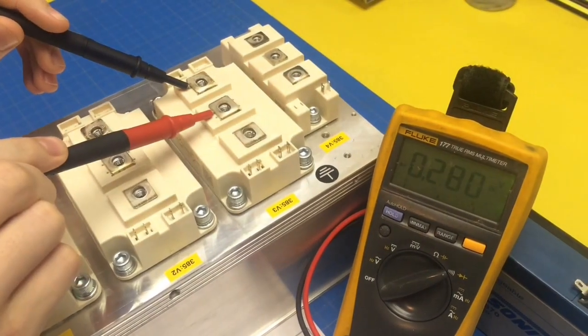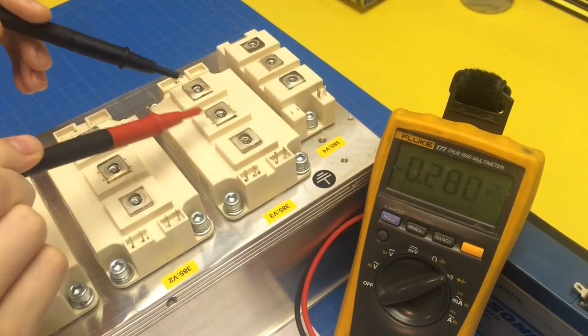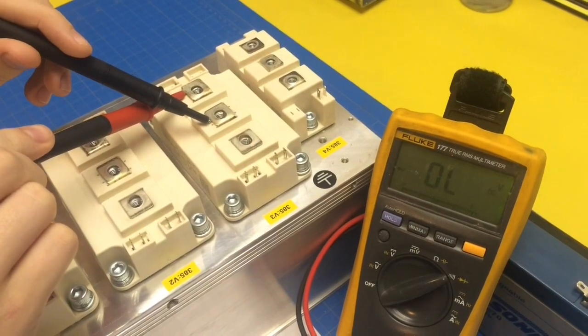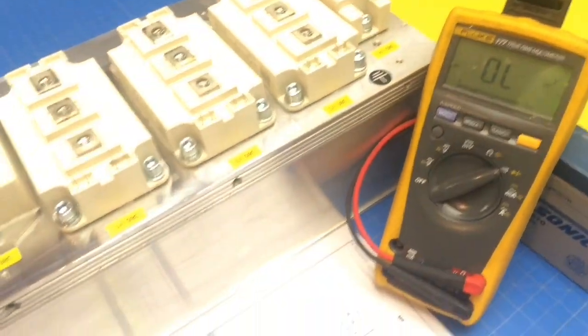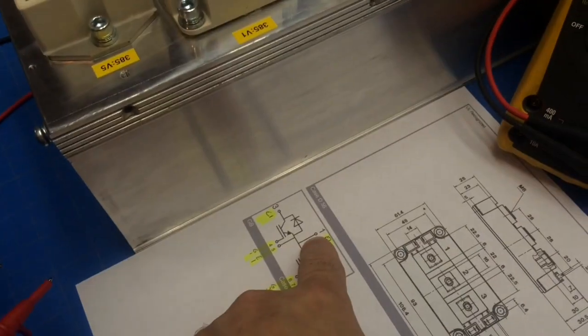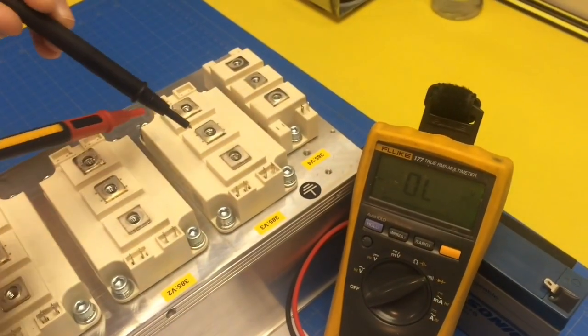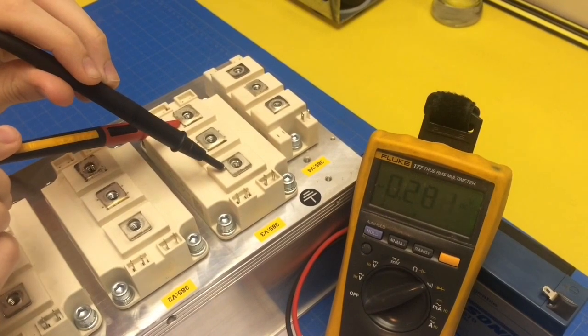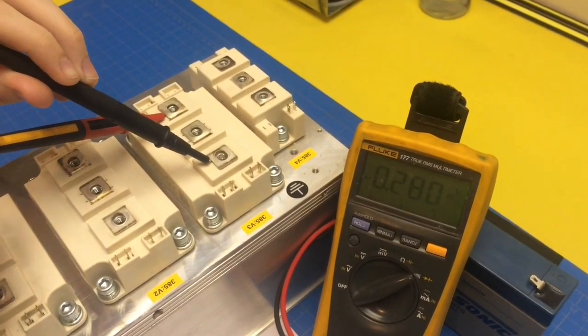Okay, so that reads good. Now if you swap them, we should read OL, and we do. So that part's good. Let's go ahead and check the other one. We need red on 1, black on 3.